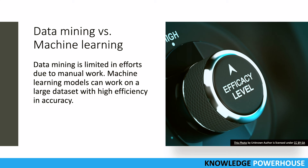Because of the manual efforts, data mining is limited in scope — it cannot handle very large datasets or diverse use cases. Machine learning models, on the other hand, can work on very large datasets with high efficiency and accuracy because they are automated. All you need is compute power. One data scientist can build a model, deploy it in a cloud setting, and it can work on big data and deliver results over time — without employing an army of engineers or manual statisticians.